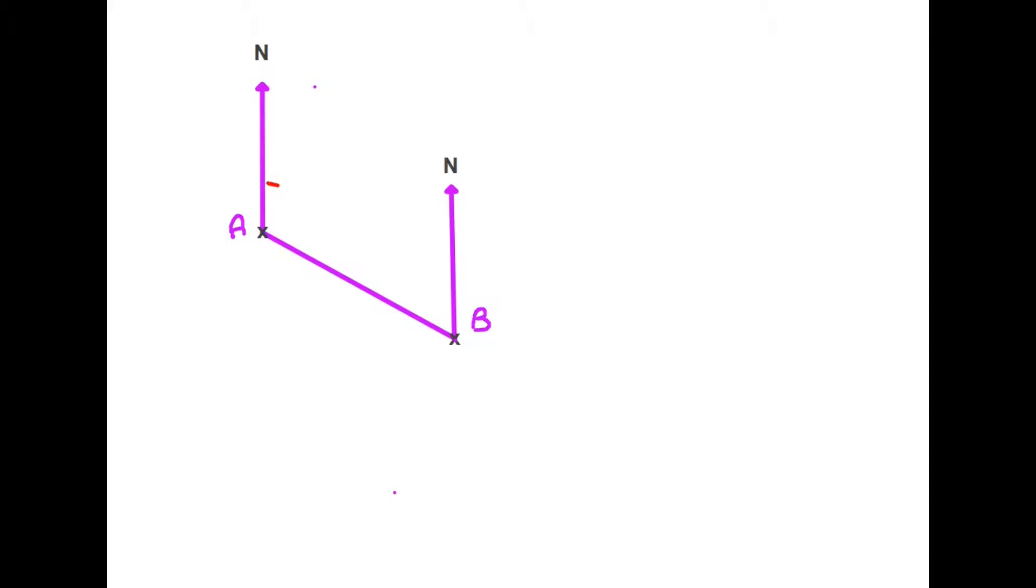So the angle we are looking to measure is this angle here, from the north line round to the line that shows the direction of B from A. In this case, the bearing would be 120 degrees, and that's your solution - bearing of B from A is 120 degrees.